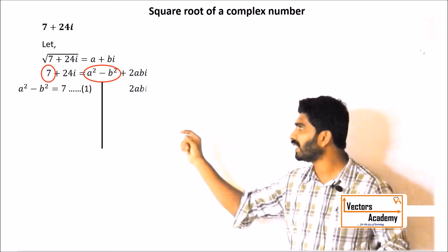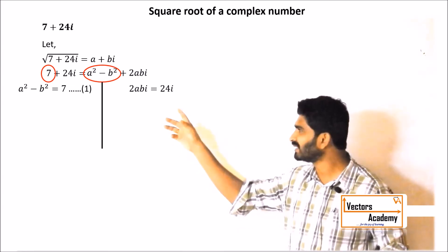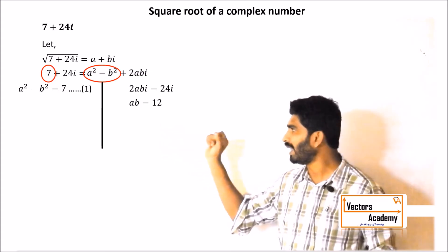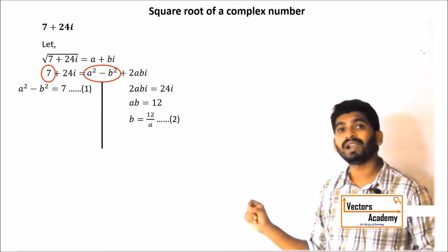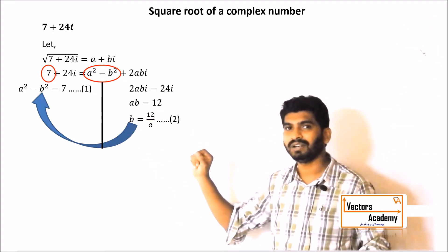From the imaginary part, 2abi is equal to 24i. Cancelling out i, we get ab is equal to 12, whereas b will be equal to 12 upon a.